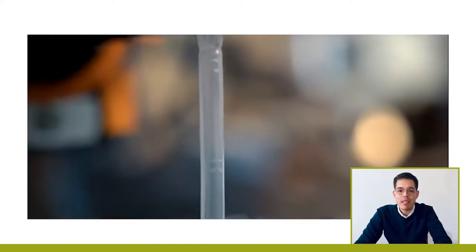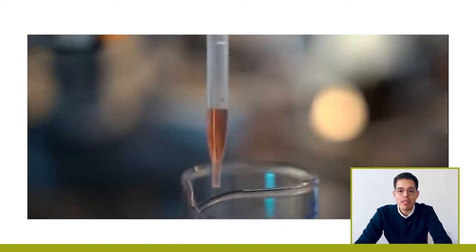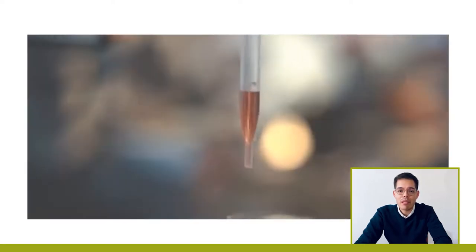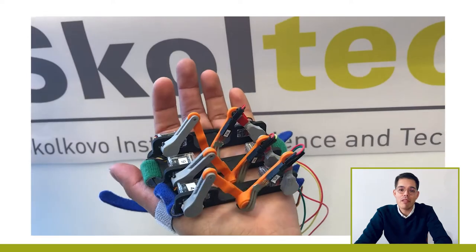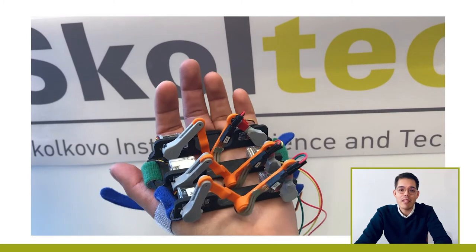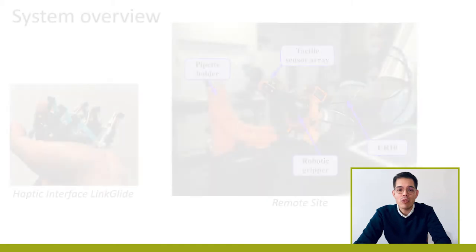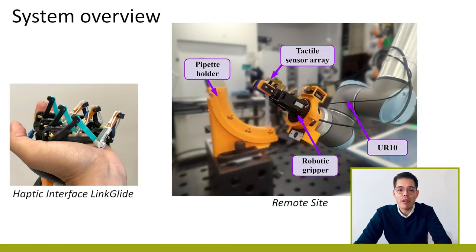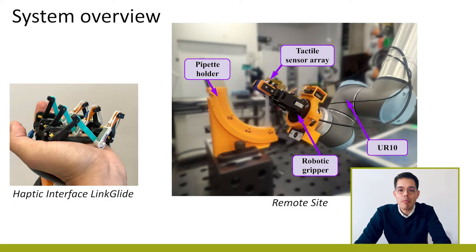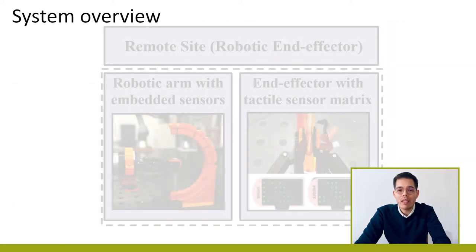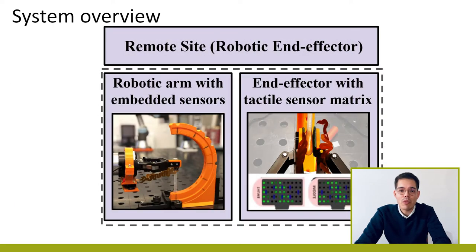This work presents a tele-manipulation system for plastic pipettes consisting of a multi-contact haptic interface linked to deliver haptic feedback at the user's palm and two tactile sensor arrays embedded in the two-finger robotic gripper. We propose a novel approach based on convolutional neural networks to detect the tilt and position while grasping the fragile objects.